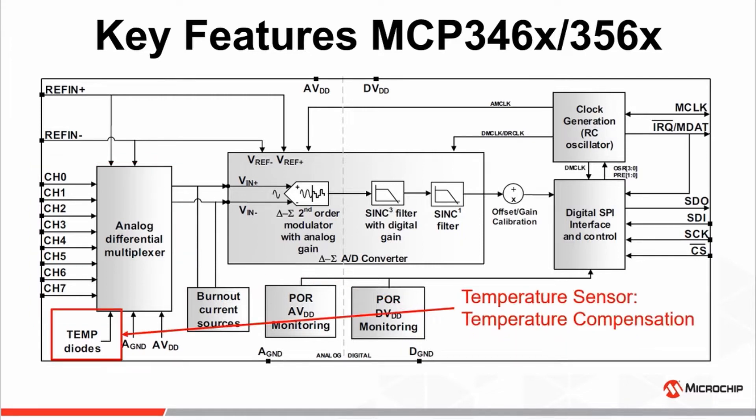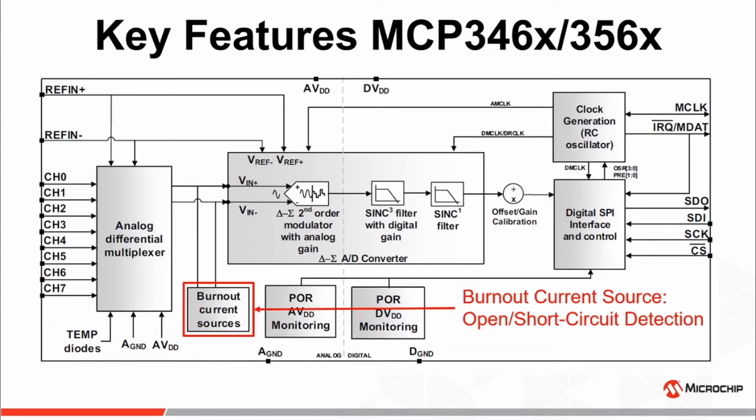We'll also discuss the internal temperature sensor and explain how temperature measurements can be made to gauge the thermal operating environment of the device. And finally, we'll talk about the burnout current sources and how they can be used to determine open and/or short-circuit conditions across the differential inputs of the ADC, indicating a faulty or damaged sensor.